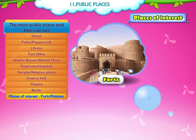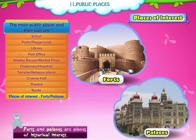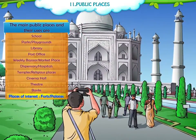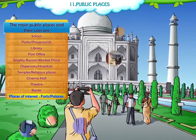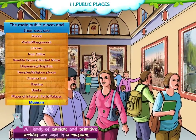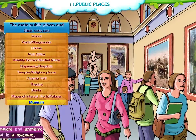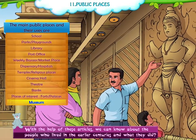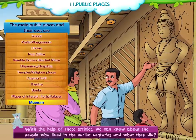Places of Interest. Forts and Palaces are places of historical interest. By visiting these places, we are able to get a lot of information about our past. Museum. All kinds of ancient and primitive articles are kept in a museum. With the help of these articles, we can know about the people who lived in earlier centuries and what they did.